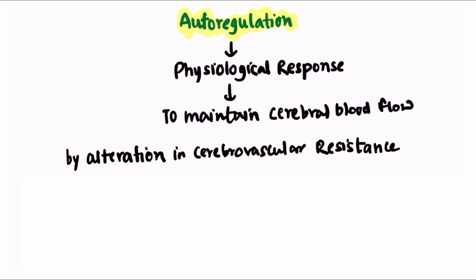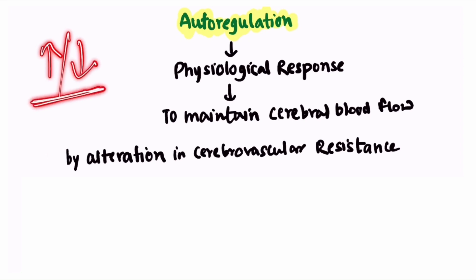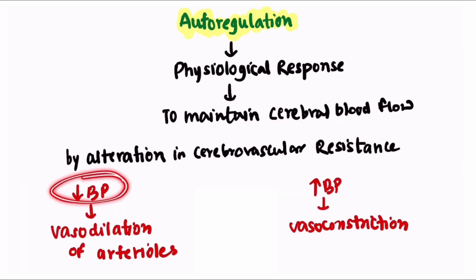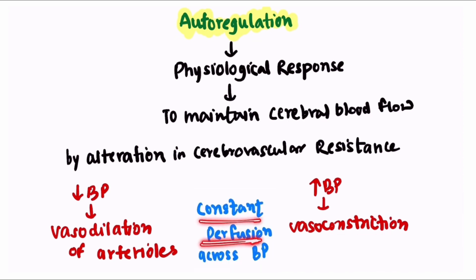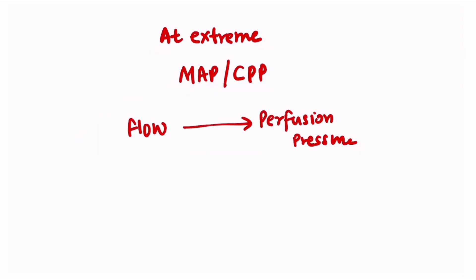This cerebral perfusion pressure provides the driving force for circulation across the capillary beds of the brain. Autoregulation is the physiological response to maintain cerebral blood flow, done by altering cerebral vascular resistance. If there is a decrease in blood pressure, there will be vasodilation of arterioles, and if there is an increase in blood pressure, there will be vasoconstriction of arterioles, maintaining constant perfusion of brain tissues. However, at extreme levels of mean arterial pressure, flow becomes equal to perfusion pressure and autoregulation fails.